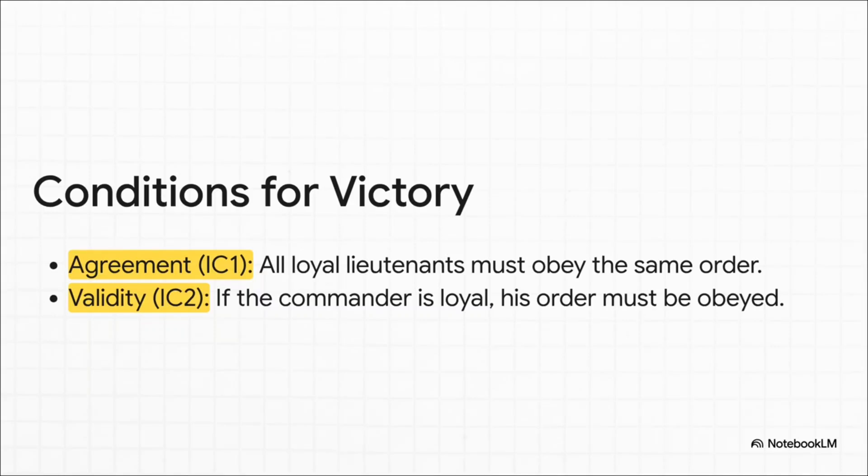First, agreement. All the loyal generals have to end up on the same page. No half-attacking, half-retreating—that's a disaster. And second, validity. If the commander is loyal, his orders have to be followed, period. The system has to make sure there's unity and loyalty, even when you know there are traitors in your midst.